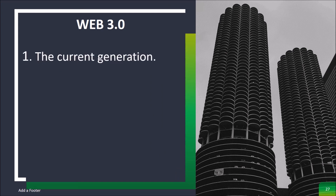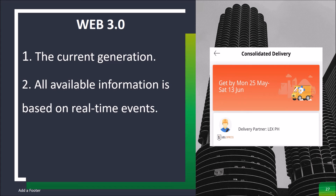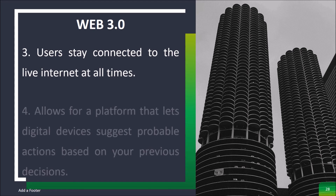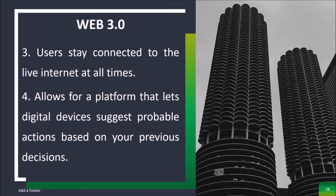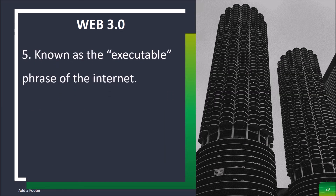Web 3.0 is the current generation. All available information is based on real-time events. For example, if a customer orders a package and wants to know when it will be delivered, they can subscribe to be notified. The backend system generates a real-time event which is delivered to the customer when the package is ready. Users stay connected to the live internet at all times, and it allows for a platform that lets digital devices suggest probable actions based on your previous decisions — known as the executable phase of the internet.